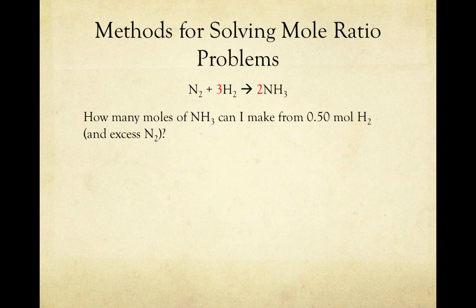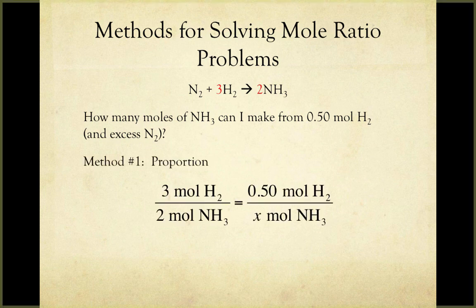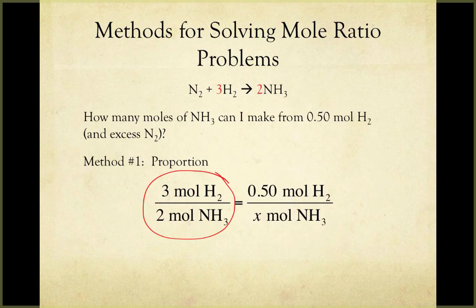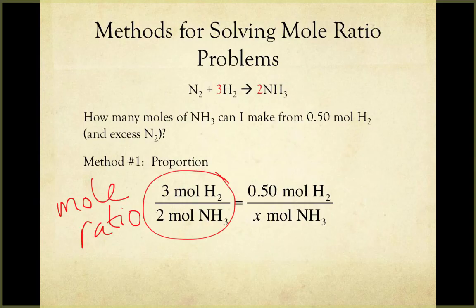While you may be able to figure this out in your head, the mole ratio of 2 to 3 is a little trickier to work with than say a 1 to 2 ratio. There's two ways to solve this problem. The first is to use a proportion. In this case, on the left-hand side of our equation, I'm going to put our mole ratio. Our mole ratio is 3 moles of hydrogen to 2 moles of ammonia.